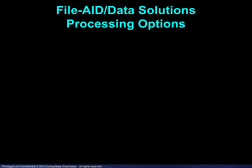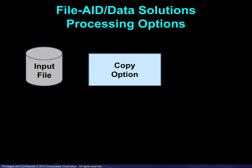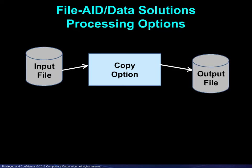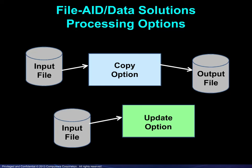There are two processing options. With the copy option, the input file remains unchanged, so a separate output file is used. With the update option, the input file will be changed, and there is no separate output file.